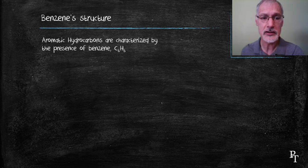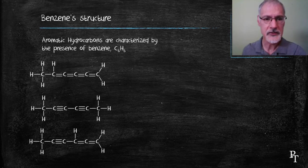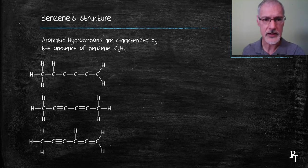Early models had it as a linear molecule with alternating double bonds and perhaps triple bonds. There are various isomers that could be drawn that all shared this structure.